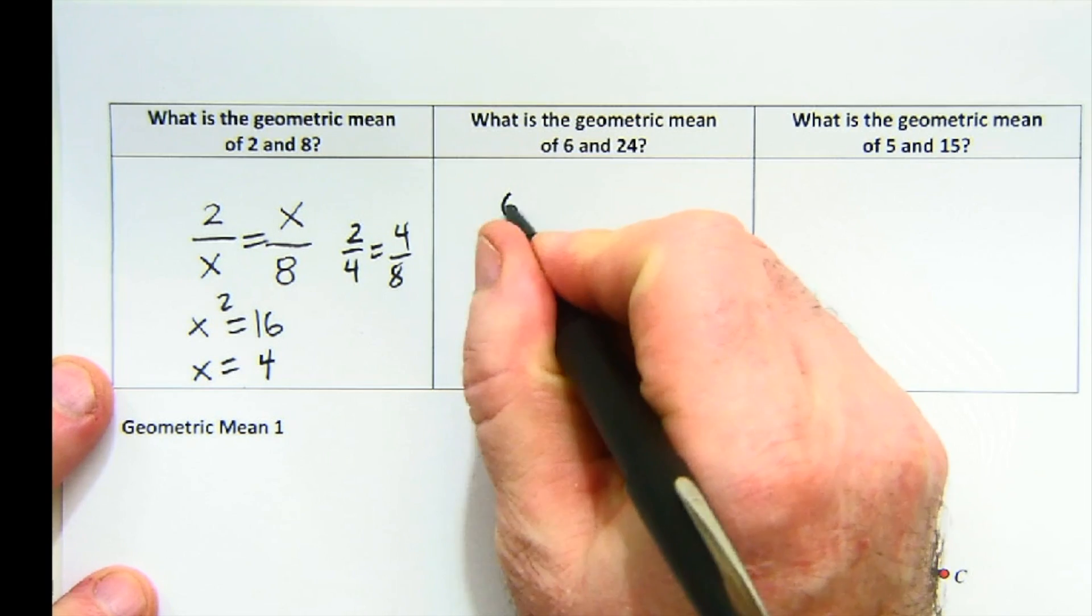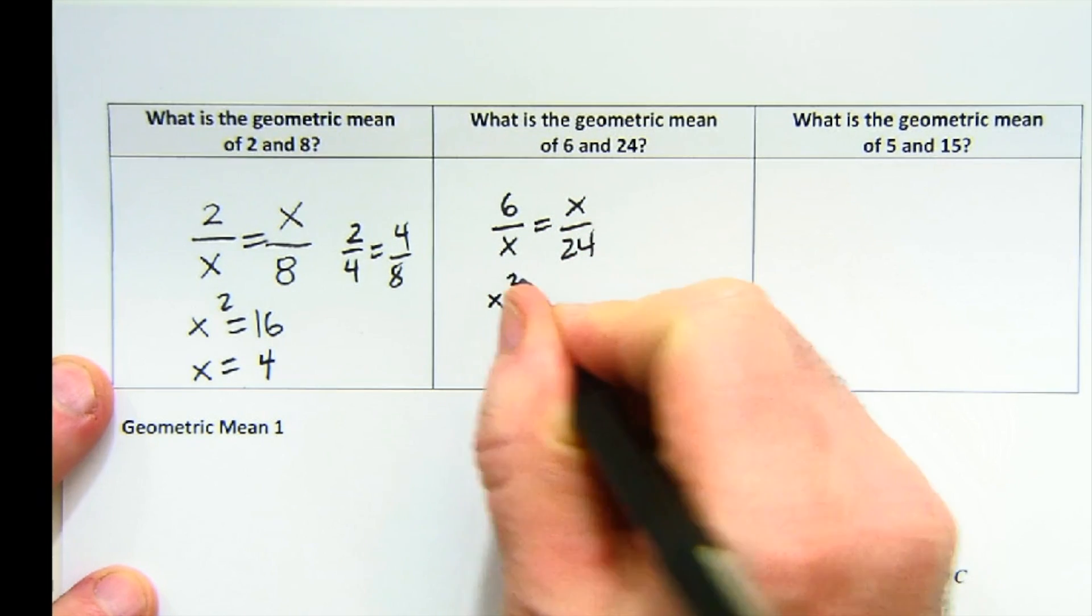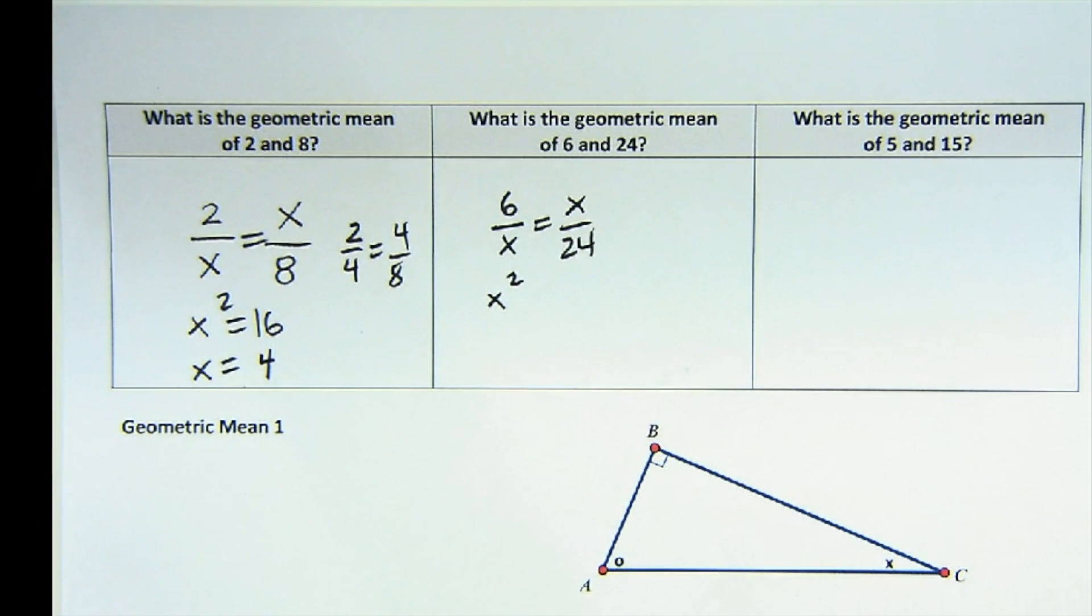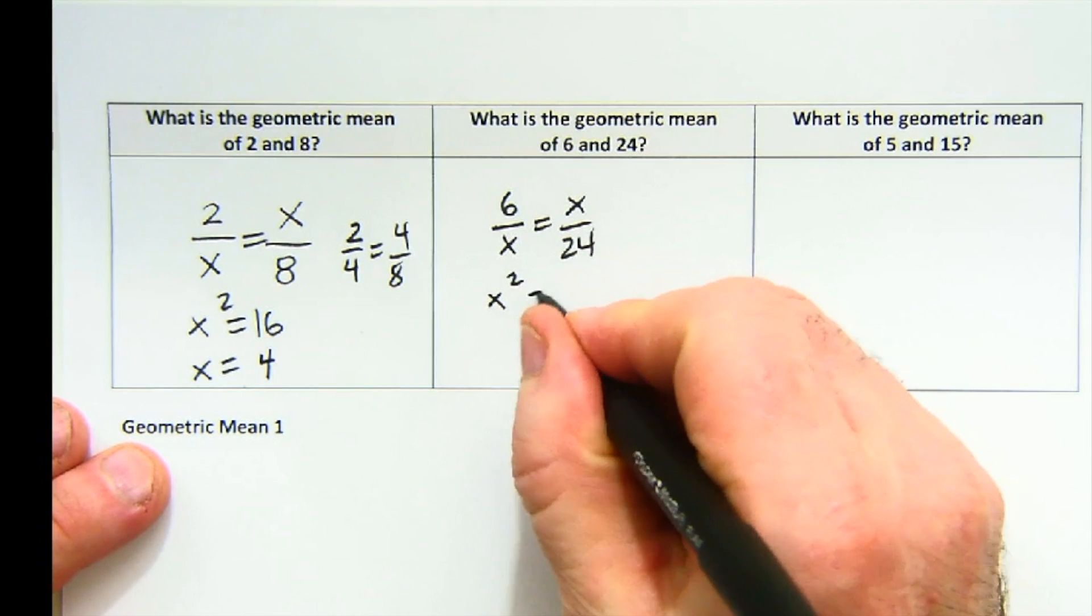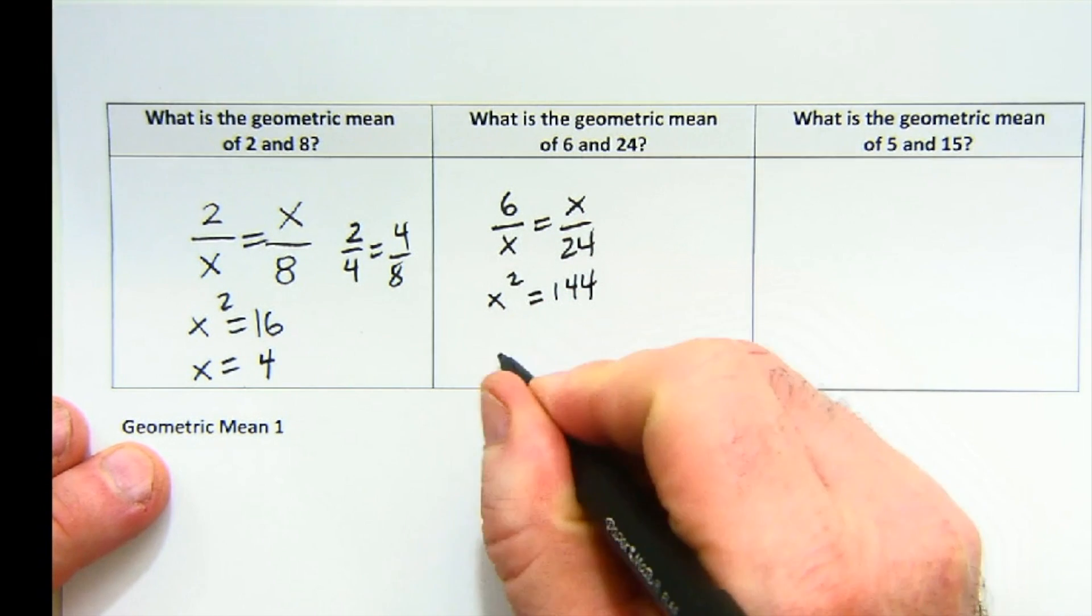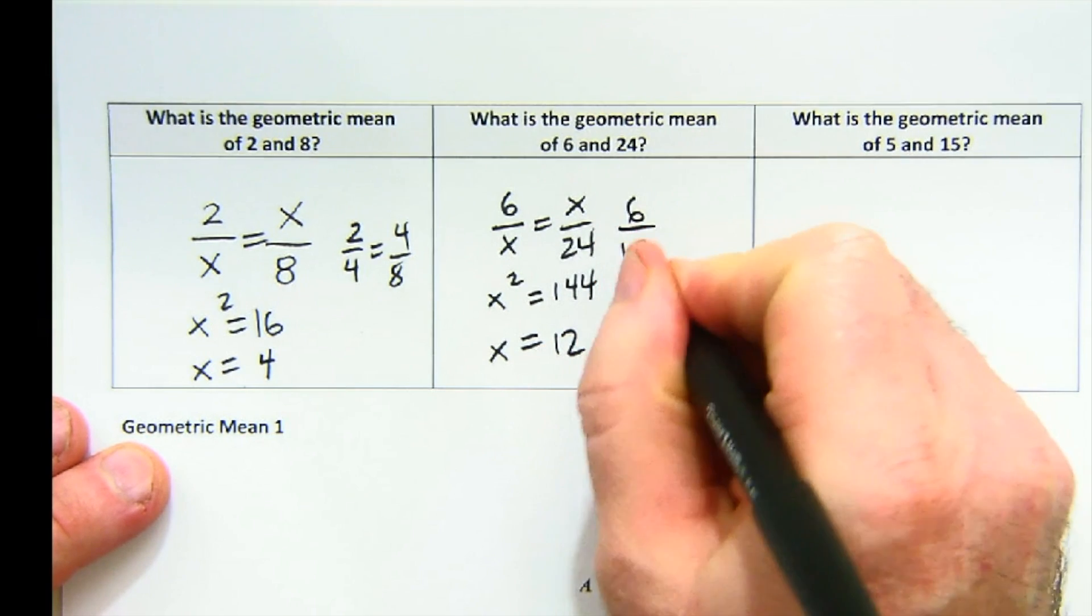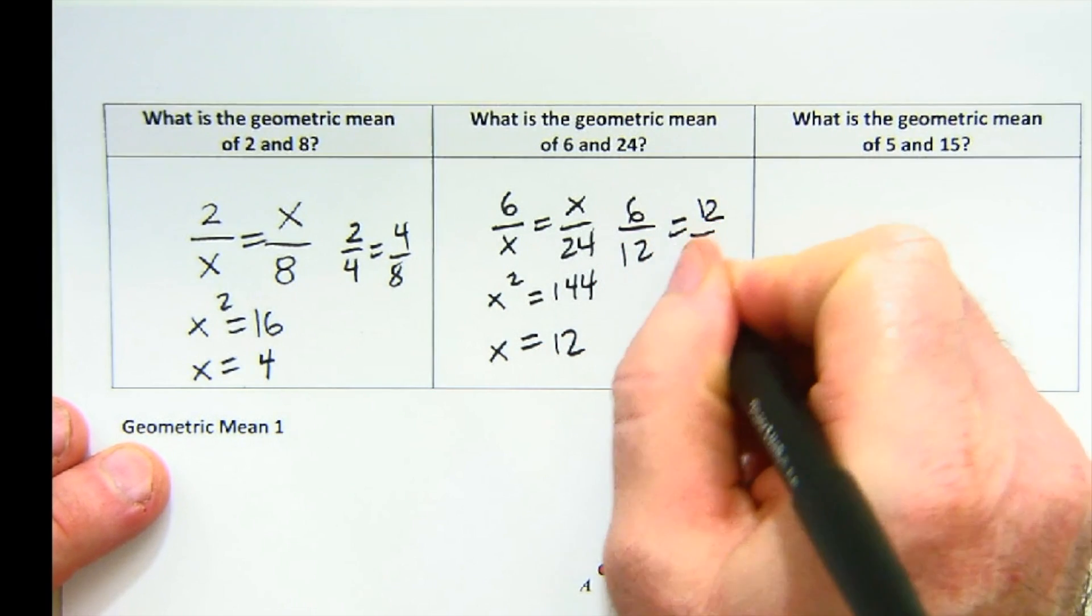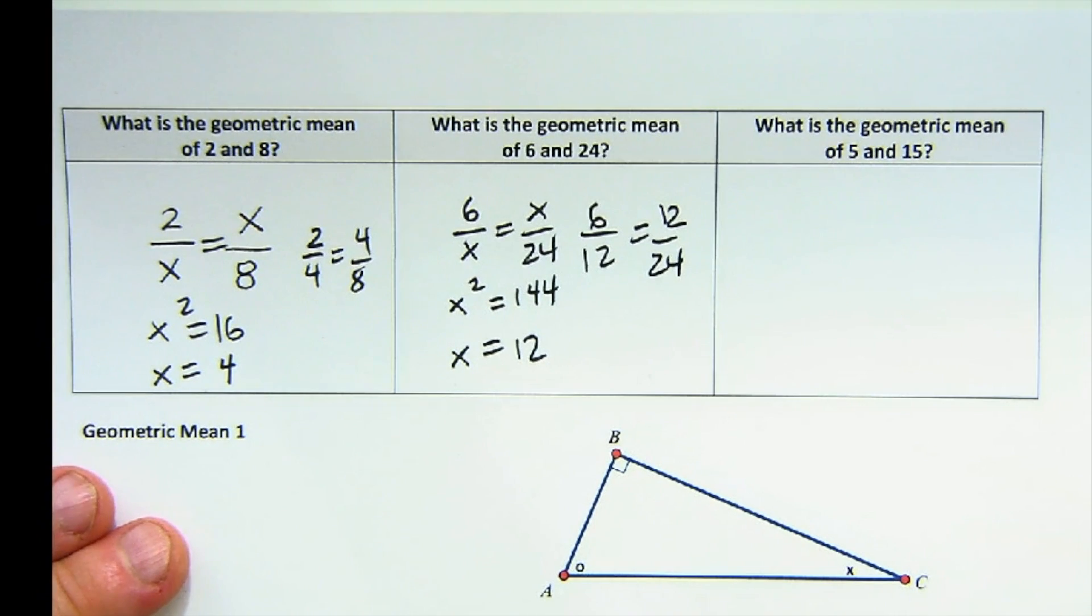Here we would say 6 is to x as x is to 24. We get x squared equals 6 times 24, which is 12 times 12, 144. And we get our values. 6 is to 12 as 12 is to 24, the proportions that work. And so on.